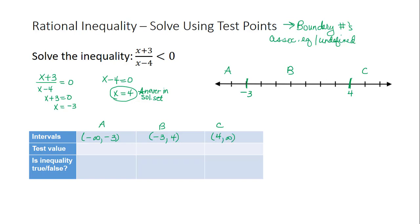Now we need to test a point from each of the regions. A number inside region A is negative 4. A number in region B is 0. And in region C is 5.